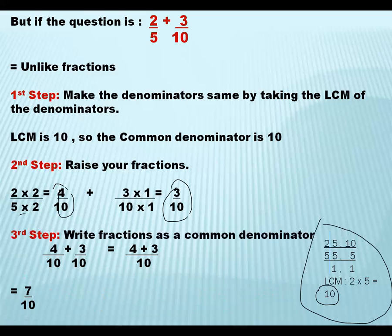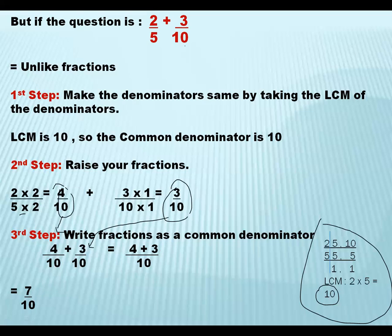After raising and making the denominators the same, I have to write down this step — write fractions with a common denominator: 4 upon 10 plus 3 upon 10, which came from the raising step. Now these are like fractions, so I take 10 as the common denominator, and the numerators are written in their positions. 4 plus 3 will become 7. So after addition of 2 upon 5 and 3 upon 10, I got the answer 7 upon 10. Now 7 upon 10 is already in its lowest term, so it doesn't require any cancelling or division, and it's a proper fraction as well. So this is your final answer.